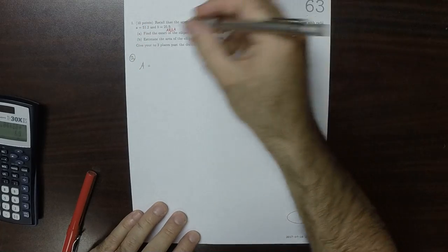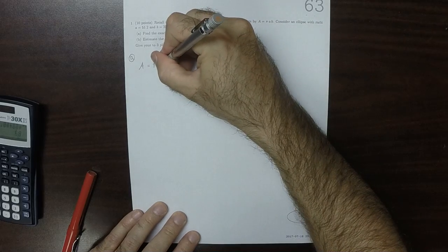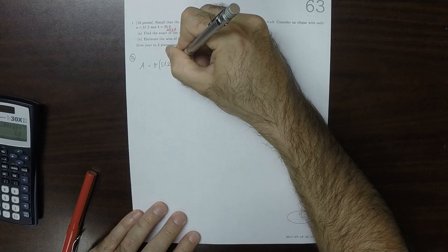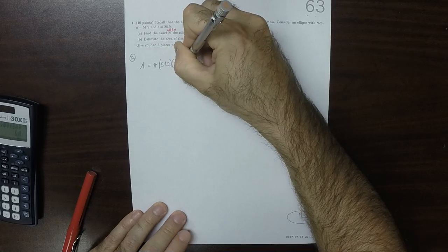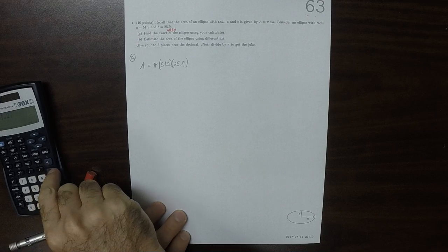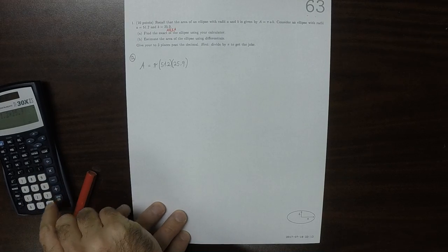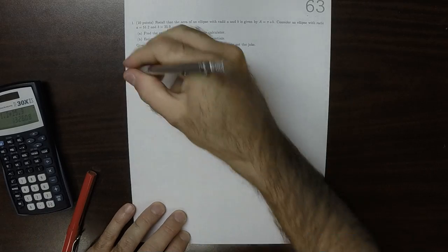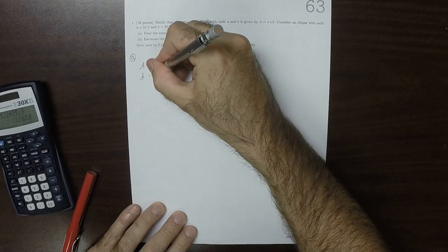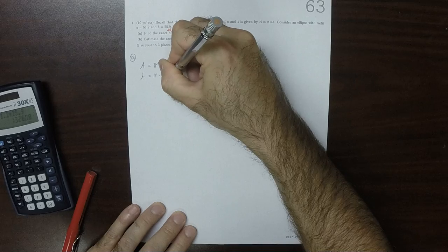The exact area is π times 51.2 times 25.9, so the exact area is π times 1326.08.